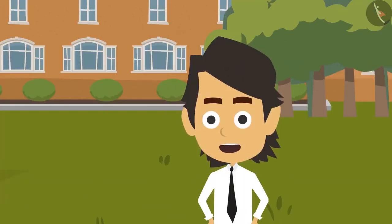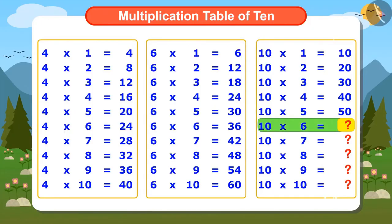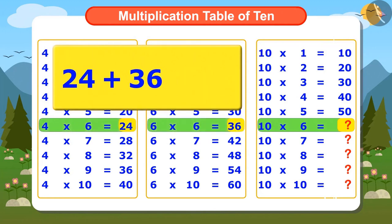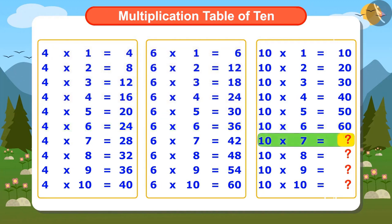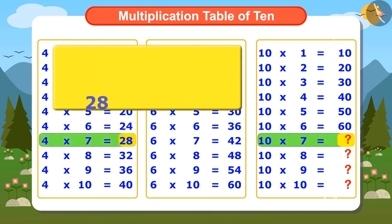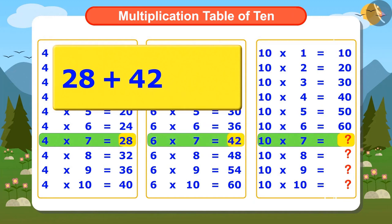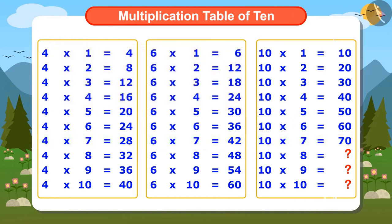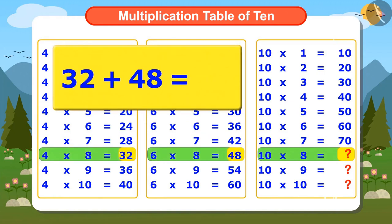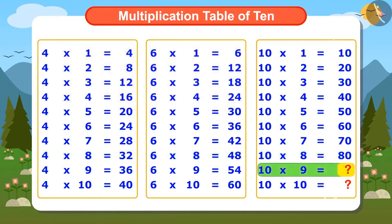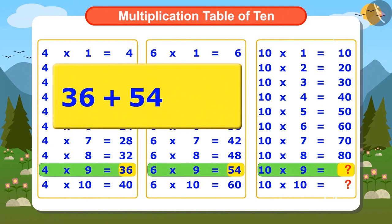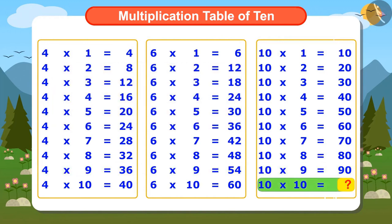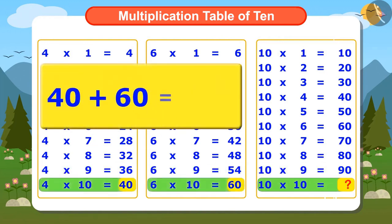To find the sixth number of the multiplication table of 10, I will add 24 and 36 — the answer is 60, so 6 times 10 is 60. To find the seventh number, we add 28 and 42, the answer is 70, so 7 times 10 is 70. To find the eighth number, we add 32 and 48 — the answer is 80. To find the ninth number, we add 36 and 54 — the answer is 90. And to find the tenth number, we add 40 and 60 — the answer is 100.